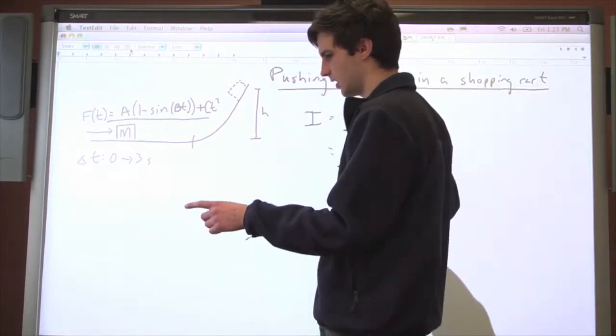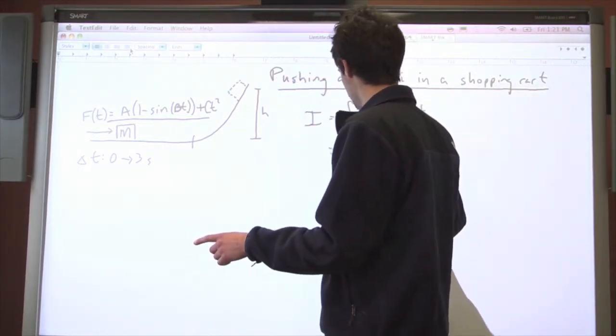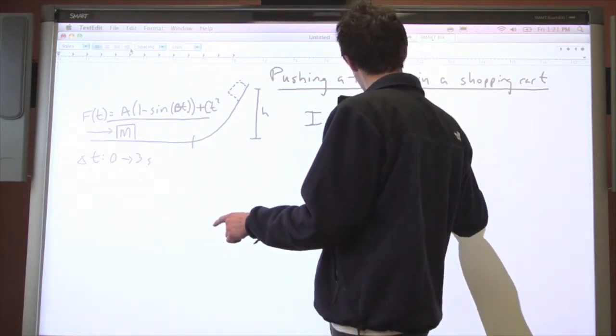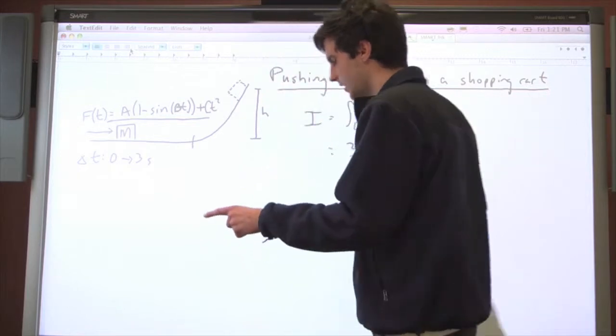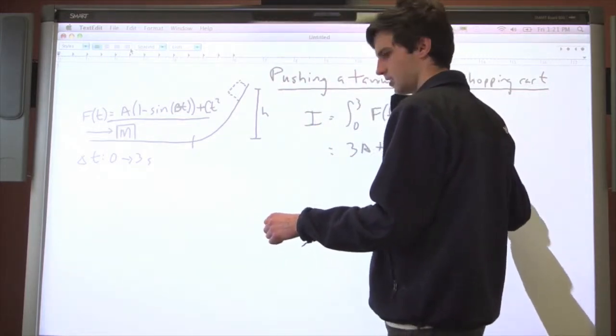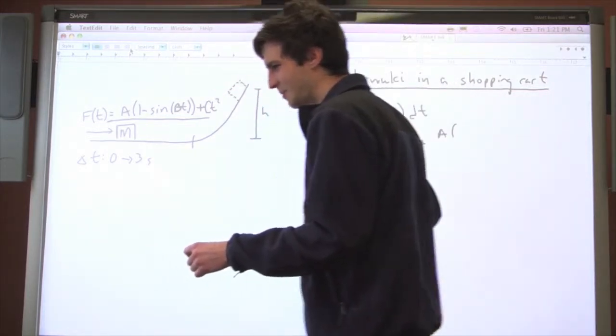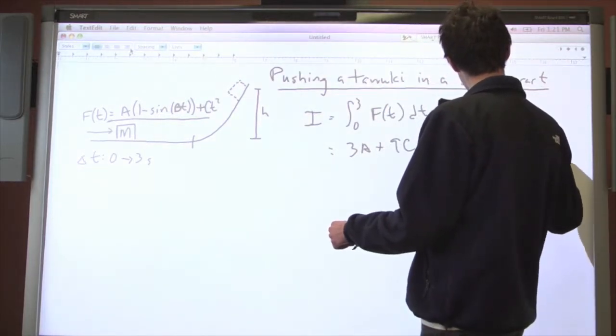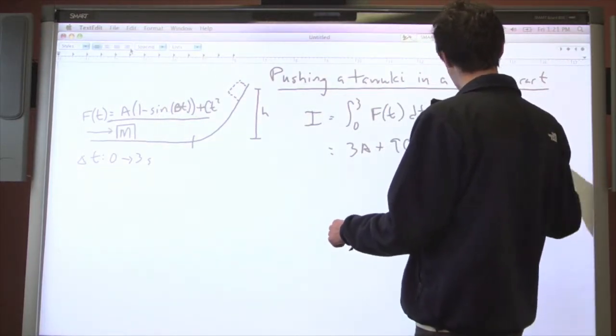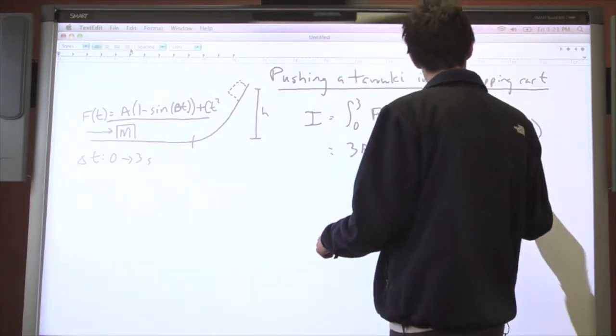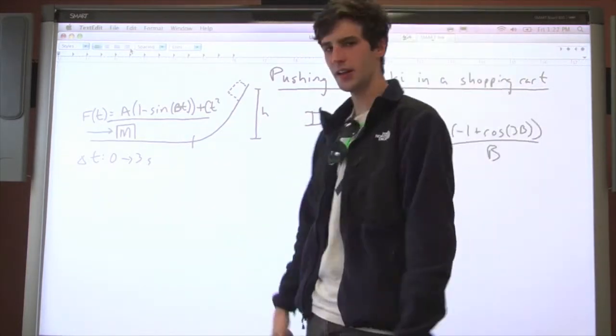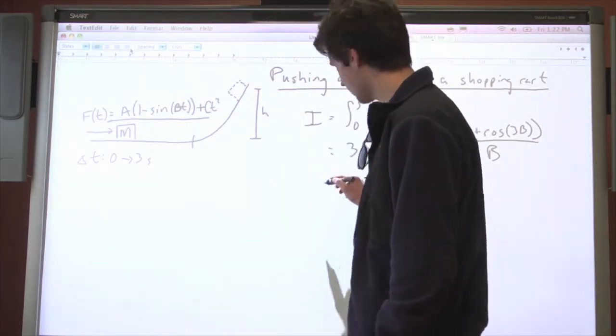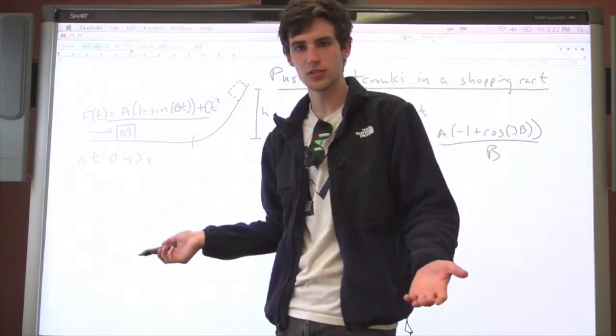So I'm going to go ahead and say that the answer equals 3a plus 9c plus a times minus one plus cosine 3b all over b. Okay, so that right there is our impulse, and we know that that equals mass times the change in velocity, which is the change in momentum.